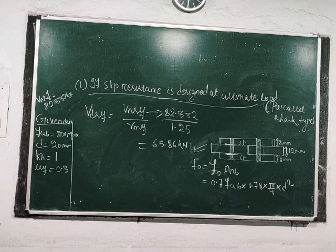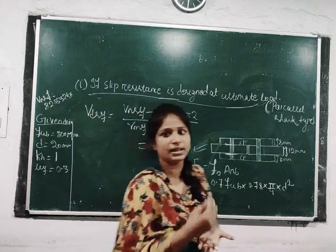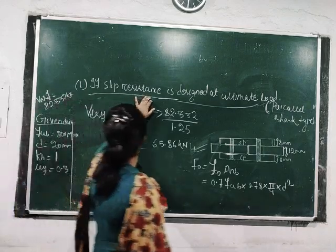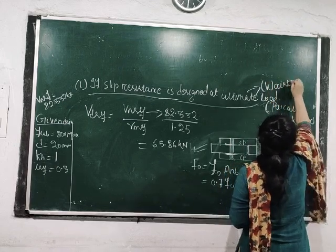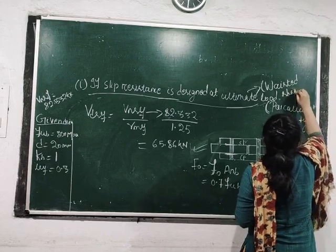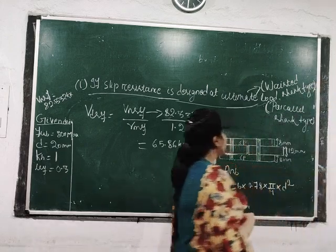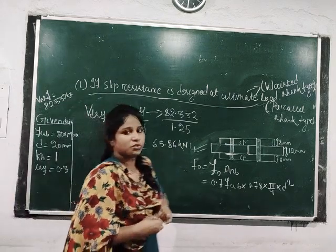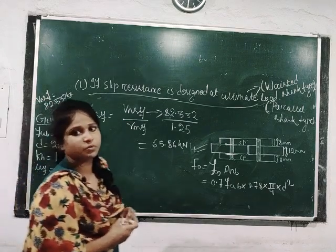In this way we can calculate the design shear capacity for the two conditions: when slip resistance is designed at service load, and when designed at ultimate load. The latter condition is for the waisted shank type of HSFG bolt, as these bolts are designed for the no-slip condition at ultimate load. This concludes today's class; in the next lecture we will solve a design problem related to high strength friction grip bolted joints. Thank you.